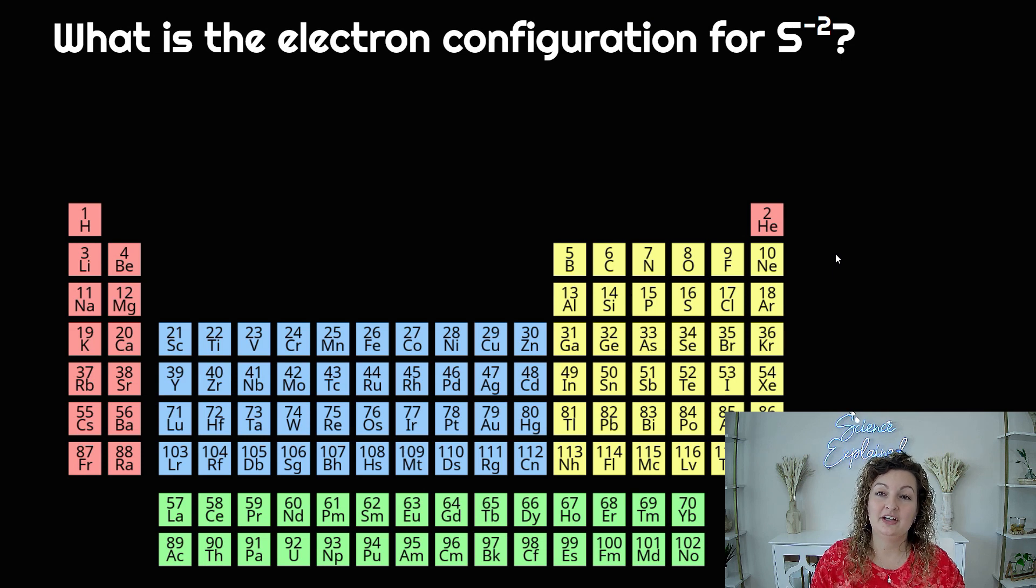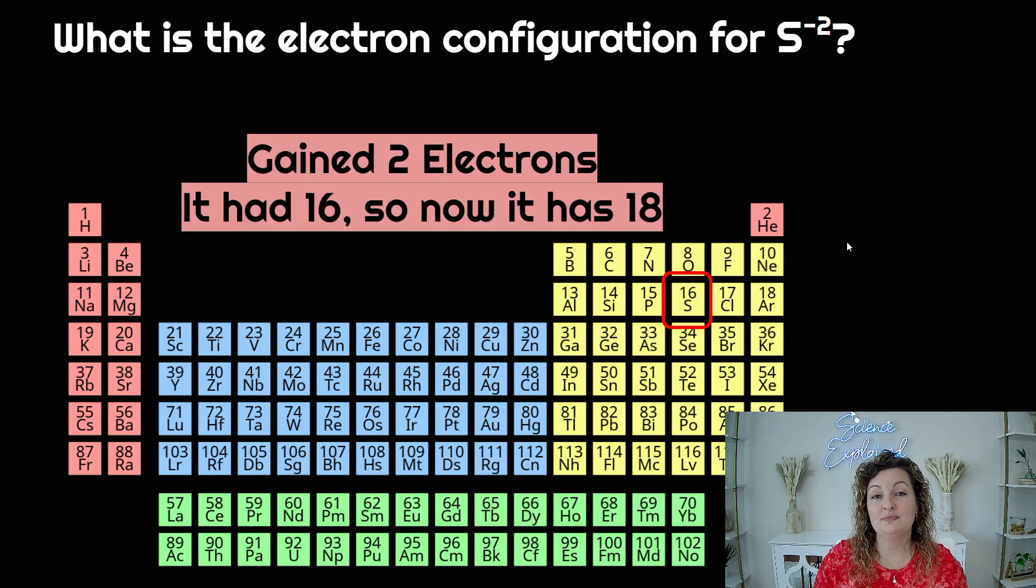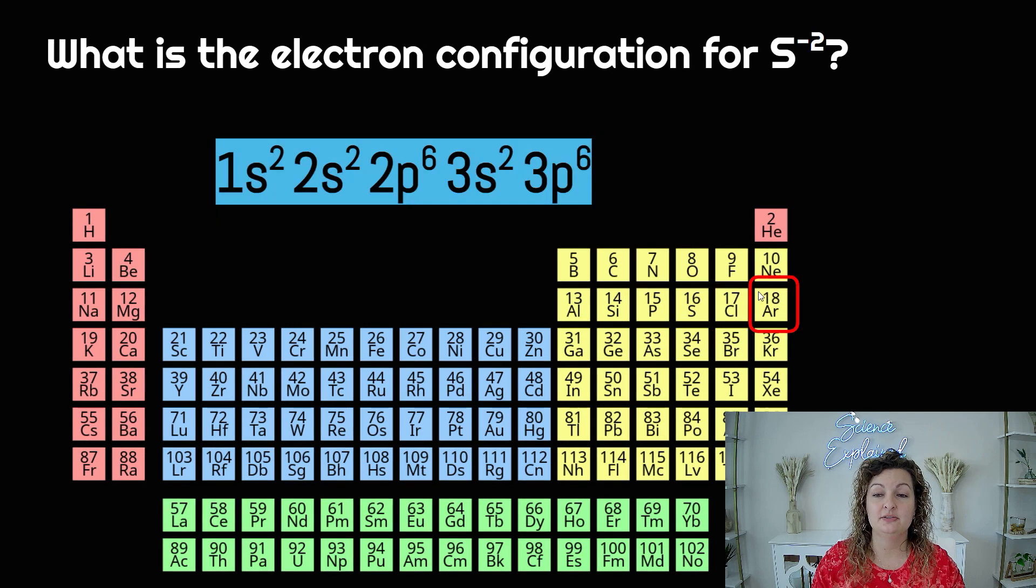So let's try another one. What is the electron configuration for S²⁻? Go ahead and find sulfur. It's right here, 16. Negative 2 charge means that it gained 2 electrons. So it had 16, it gained 2, which means now it has 18. So our stopping point needs to be right here at 18. Remember it didn't turn into argon, it just has 18 electrons. So that's where we need to stop with our electron configuration.